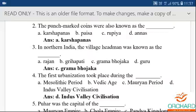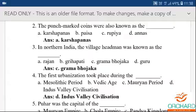Fourth question: The first urbanization took place during — the Mesolithic period, Vedic age, Mauryan period, or Indus Valley Civilization? The answer is Indus Valley Civilization.